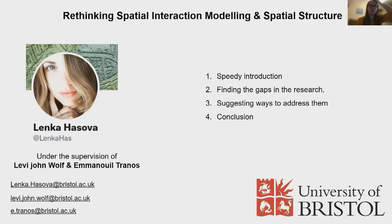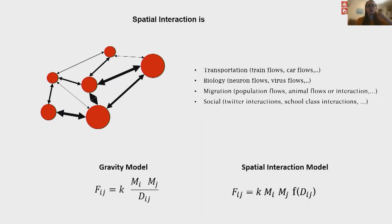If you're not familiar with the terms, we refer to spatial interaction when we talk about any kind of flow data where actors, usually humans, move between places and which can be visualized in a network. Spatial interaction models are the framework we use to model this data, and they have been very successful, though their performance is a continuous discussion in the field.